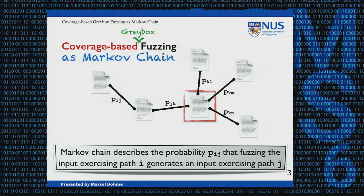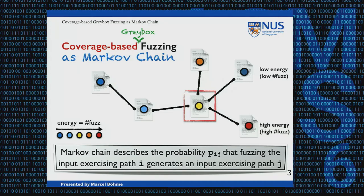And there you go — this is a Markov chain. It's a fancy name for a very simple concept. The Markov chain here describes the probability P_ij that fuzzing the input exercising path i generates an input exercising path j. One interesting thing about this Markov chain is that it has a stationary distribution. Independent of where you start, as you follow transitions from state to state according to these transition probabilities, you will end up in a certain state with a certain probability — that is the stationary distribution. Certain states will be visited more often, forming the high-density region of the stationary distribution.